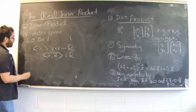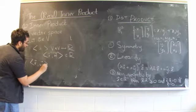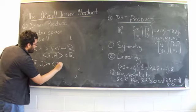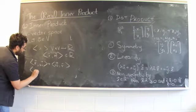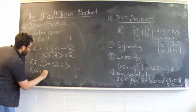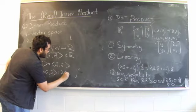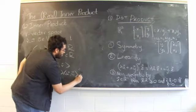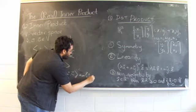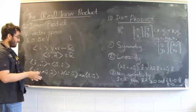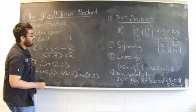And the defining properties of inner product are also the same as that of dot product. In particular, it will have to satisfy symmetry, which means that inner product of v and w is the same as inner product of w and v. And linearity, which means lambda times u plus mu times v inner product with w would have to be lambda times u inner product with w plus mu times v inner product with w. Again, word of caution, these things change a little bit if you go into complex inner products.